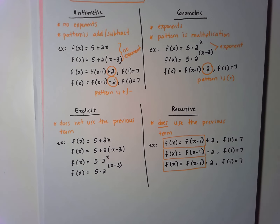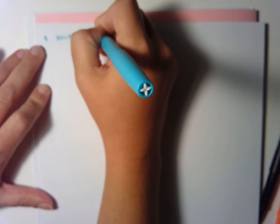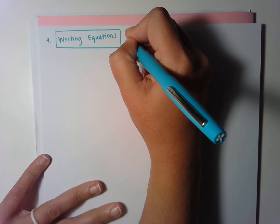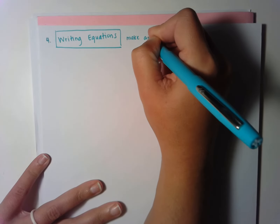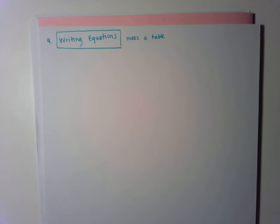Now that we've talked about sequence vocabulary, let's talk about how to write equations, because that's going to be one of the biggest parts of the assessment. I'm going to ask you to write equations from word problems, from graphs, and from visual patterns. But no matter what, my advice is to make a table before you start. Once you have a table of values, it's always easier to write the equation.